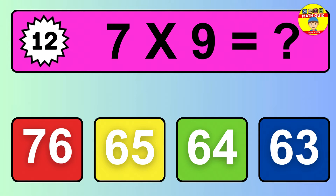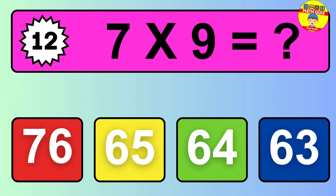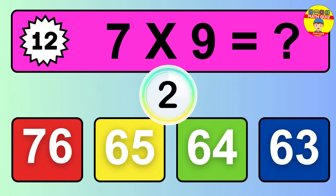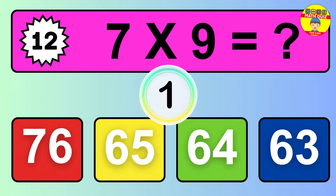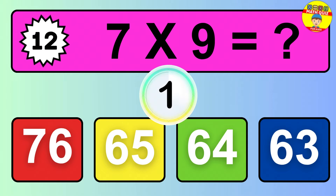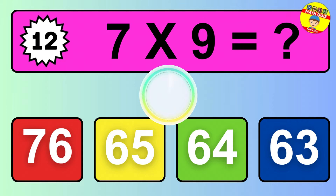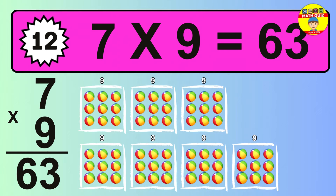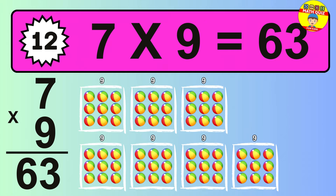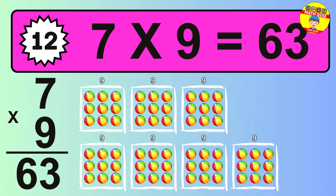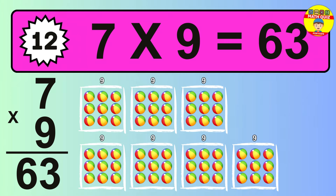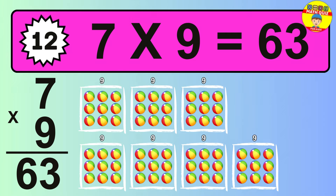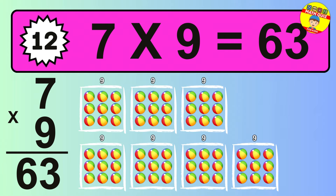Question 12. 7 times 9 equals what? The answer is 7 times 9 is 63. To calculate, we have 7 groups with 9 balls each one. So, how many balls do we have?